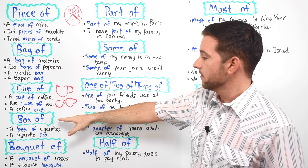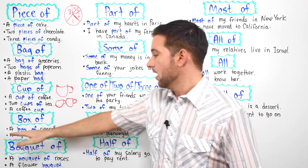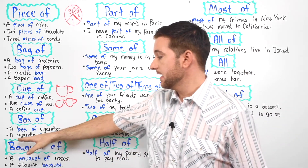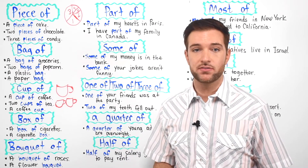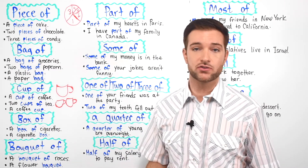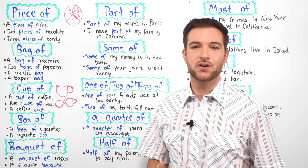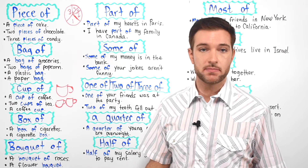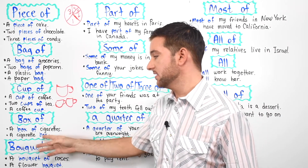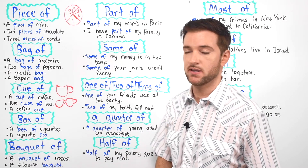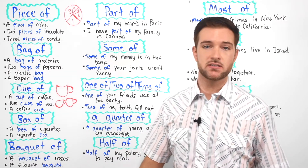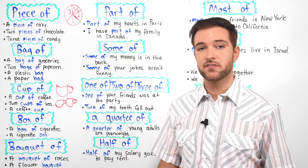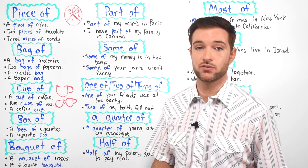And then we have "box of." So a box of cigarettes. Or you can say a cigarette box — same sort of thing. In this case we're talking about what kind of box it is, not the quantity. So what kind of box is it? It is a cigarette box. You can say it is a big cigarette box, it is a small cigarette box. We specify the type of box, but we are not paying attention to the quantity.